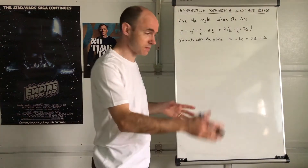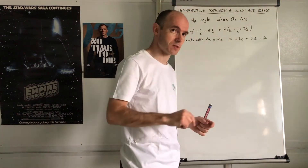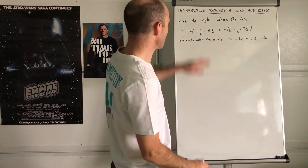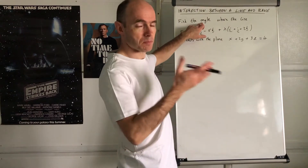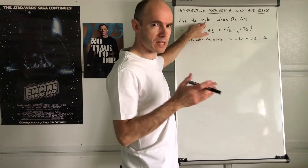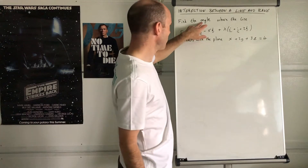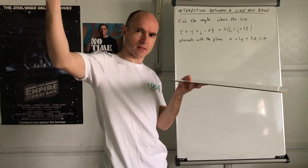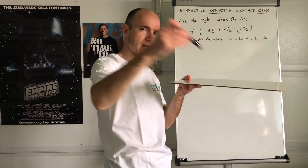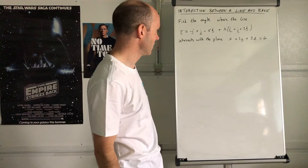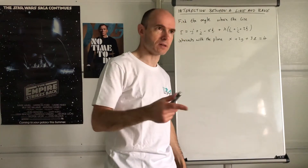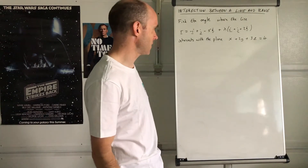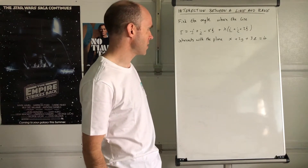A little add-on: we can also find the angle of intersection between the line and the plane. The first thing you should be thinking of is the scalar product, because whenever an angle is involved with vectors, it's always a scalar product. For a scalar product you need two direction vectors.